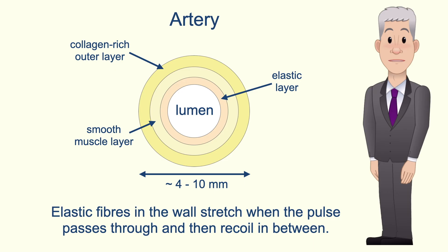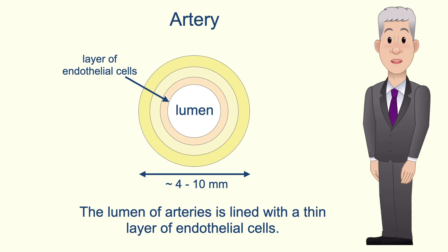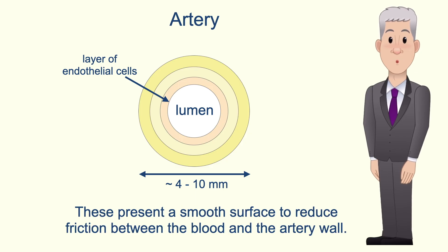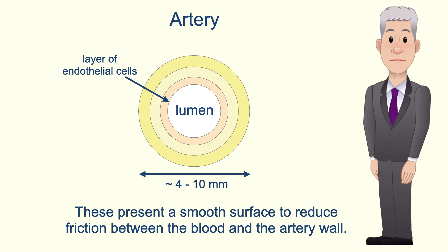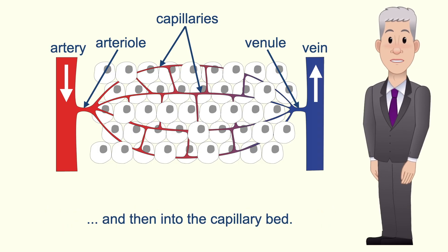Elastic fibers in the walls stretch when the pulse passes through and then recoil in between, and this elastic recoil helps to keep the blood moving forward. The lumen of arteries is lined with a thin layer of endothelial cells. These present a smooth surface to reduce friction between the blood and the artery wall. Once the blood passes into the tissues it travels through narrower blood vessels called arterioles and then into the capillary bed.